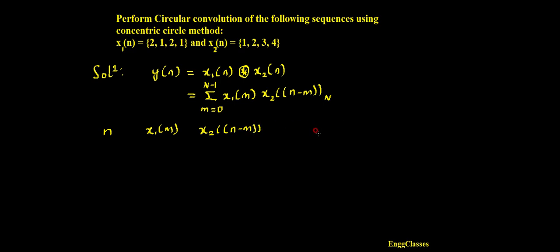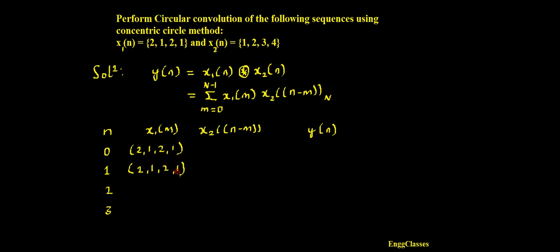n can take four different values: n = 0, 1, 2, and 3. In all cases, x1(m) is the constant term, so that signal remains as it is — defined as {2, 1, 2, 1}. So in every step x1(m) stays as 2, 1, 2, 1. Now let's consider what happens to x2(n-m) for each value of n.